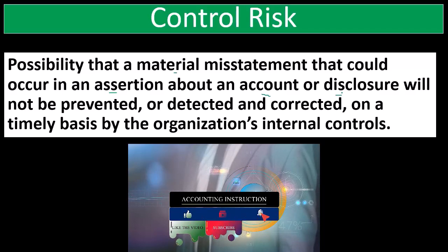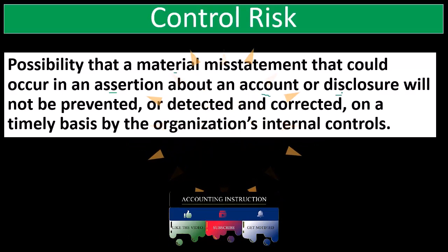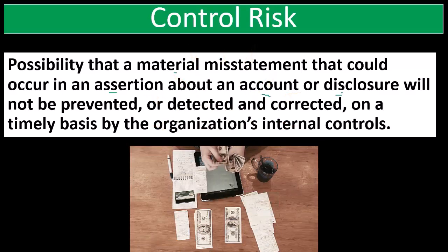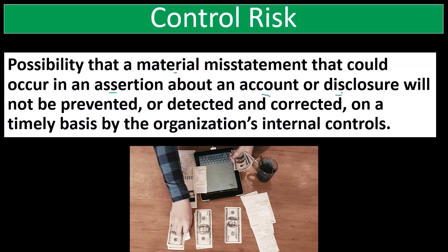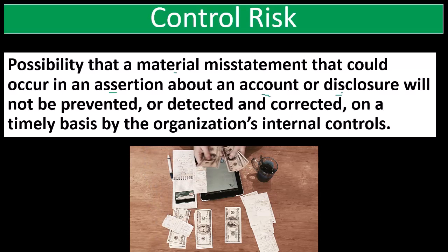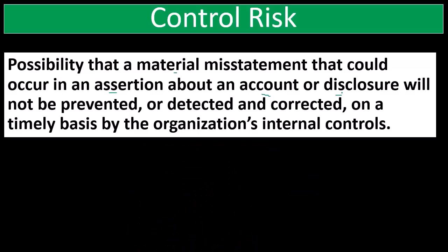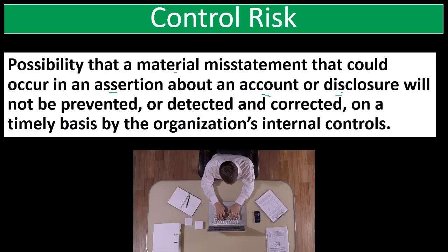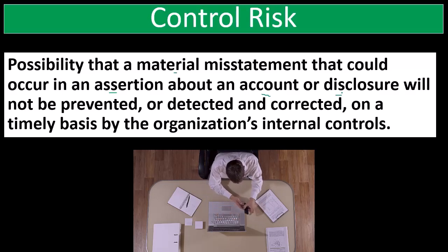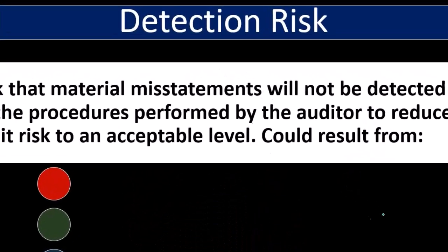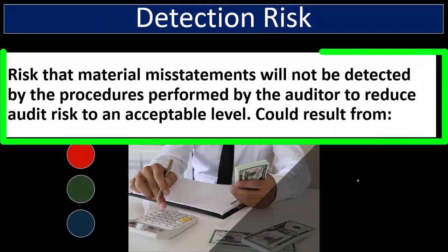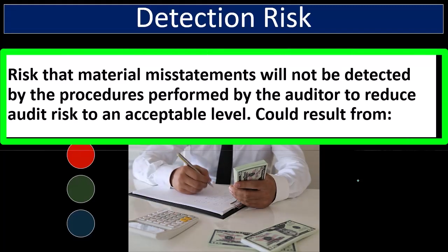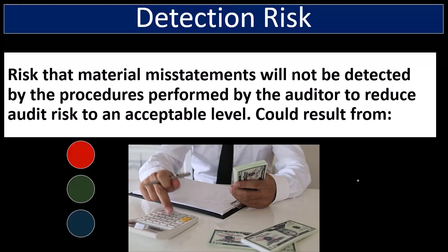So for inherent risk we consider no controls; then for control risk we put the controls back in place. For cash, the company would have a system of controls to account for the high inherent risk, and the question becomes: are those controls sufficient to detect risk, and what's the likelihood they would not catch a problem? We consider this on an account level — inventory, cash, and different types of accounts.